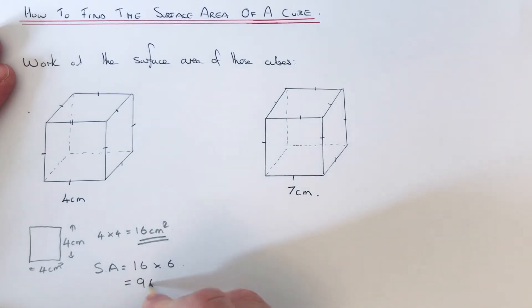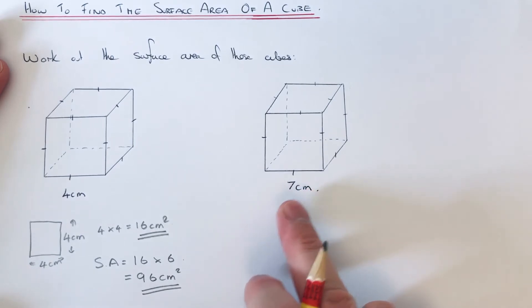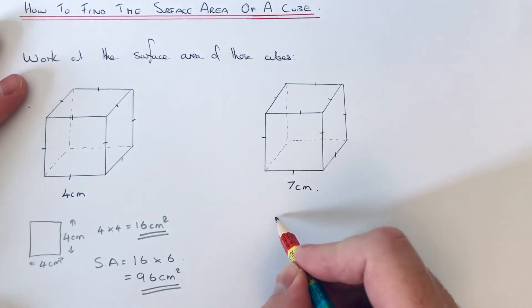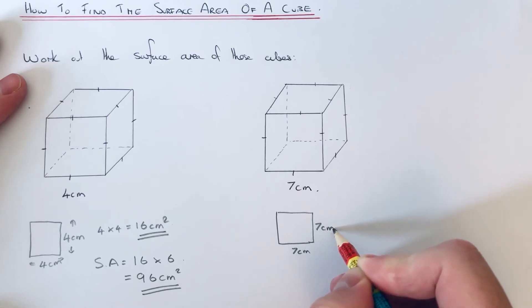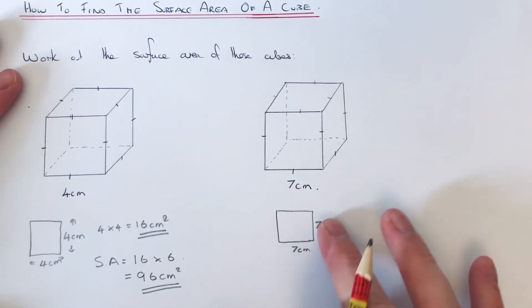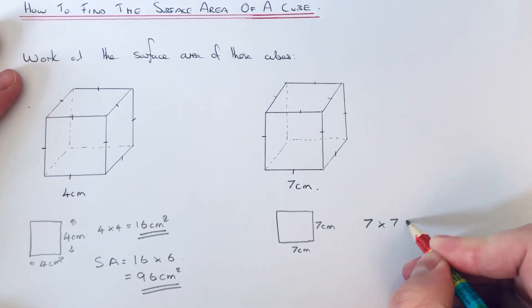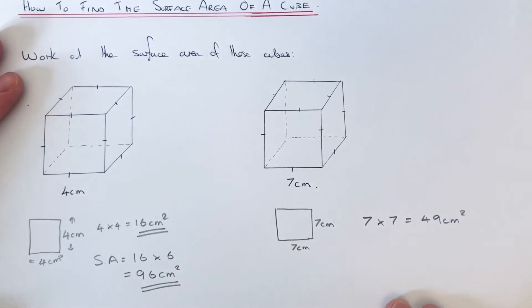Let's have a look at our second example. This time we've got a cube of side length 7 centimeters. If we start off by working out the area of one square face, we just do length times width. So 7 times 7 is 49 centimeters squared. Since we have six identical faces...